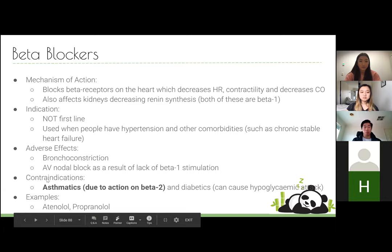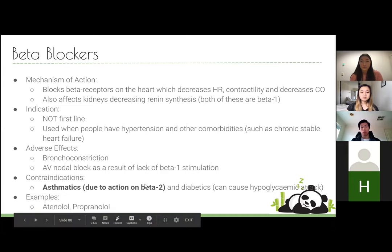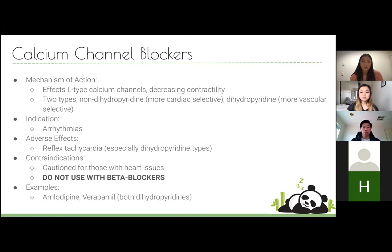The reason beta blockers are contraindicated in asthmatics is that salbutamol (Ventolin) is a beta agonist used to bronchodilate, so giving a beta antagonist causes the opposite effect and may cause them to stop breathing. AV nodal block may also occur. Examples of beta blockers are atenolol and propranolol — note the '-olol' suffix.